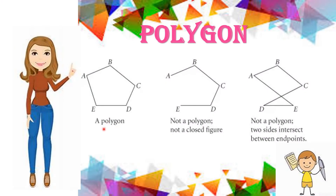This figure is a polygon. It is a closed plane figure. This one is not a polygon since it is not a closed figure — there is an opening in this part. And this one is also not a polygon since the two sides intersect between end points.